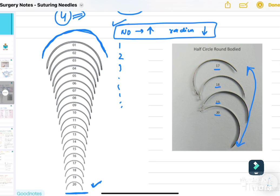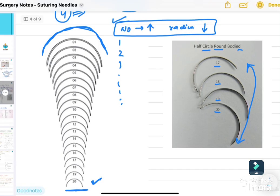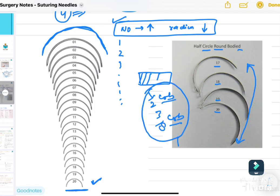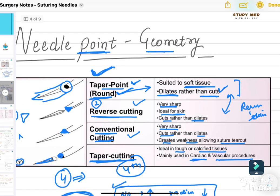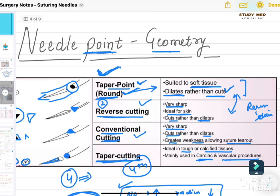Here you can see another diagram for better demonstration: 17, 18, 19, and 20. These are round bodied needle, half circle needle. On suture material, it is written as half CRB or 3 by 8 CRB. We will be seeing what this means in this video ahead.